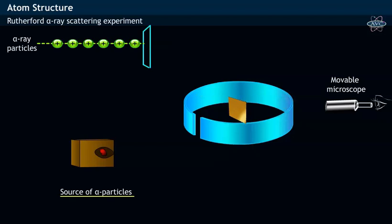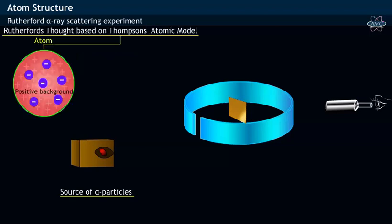The alpha particles being positively charged cause scintillations on striking the fluorescent zinc sulphide screen. Based on Thomson's model, Rutherford thought that the alpha ray particles emitted from radioactive source would pass through the gold foil with no or slight deflections.